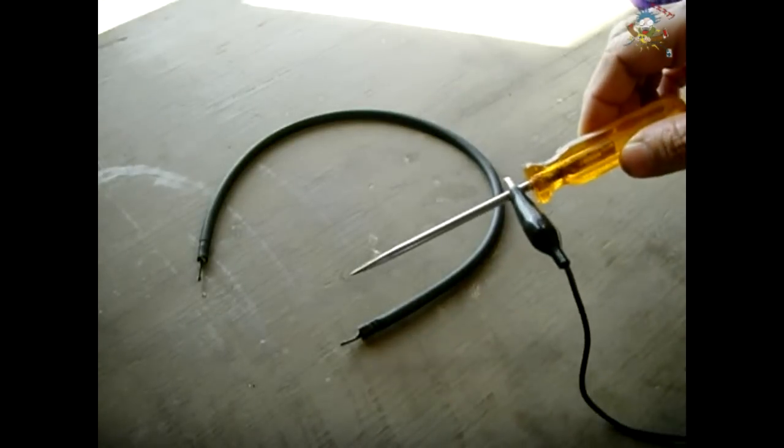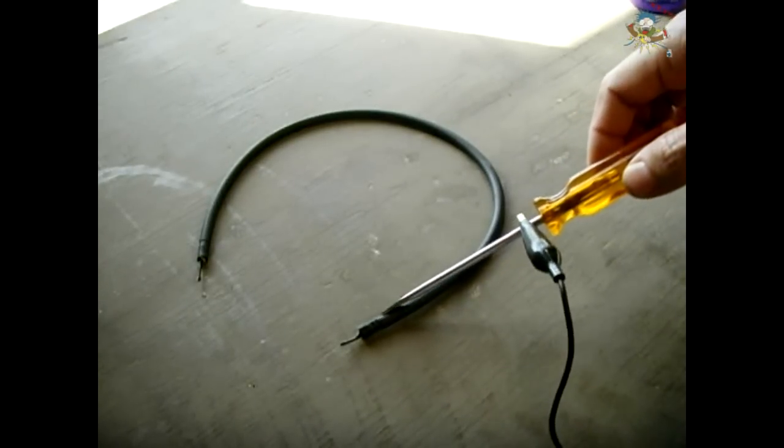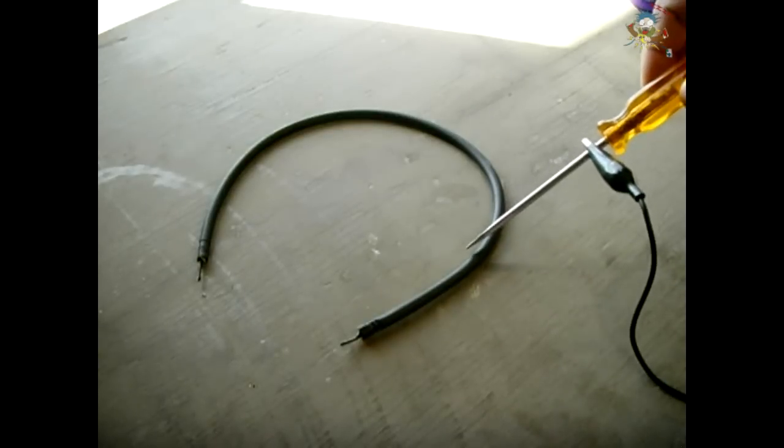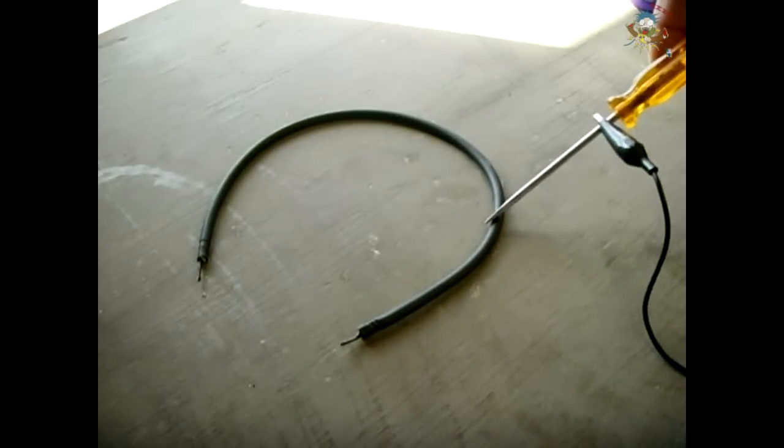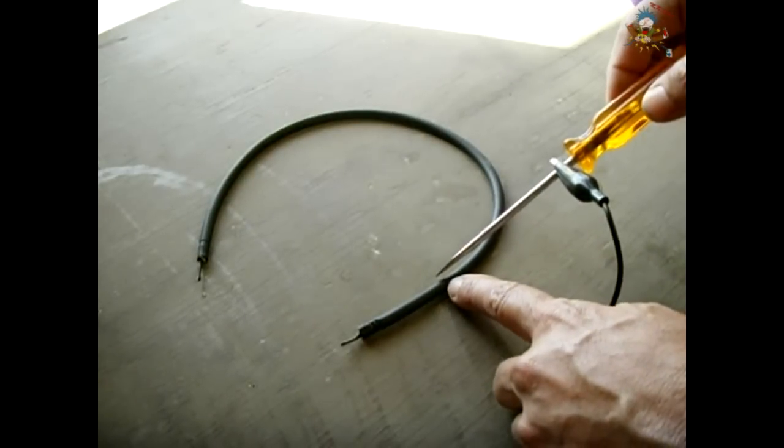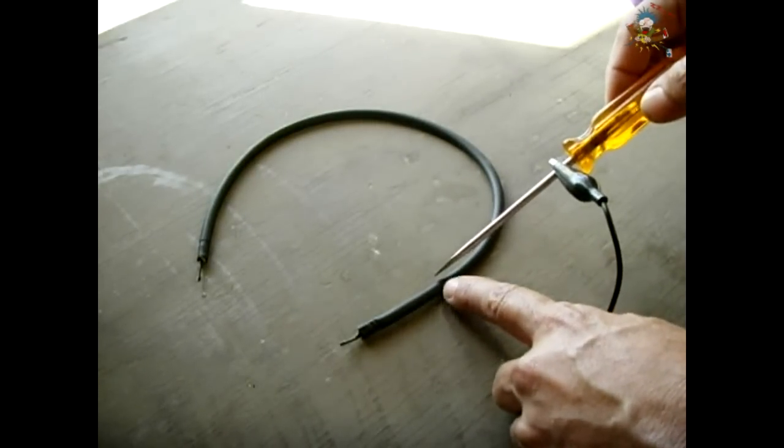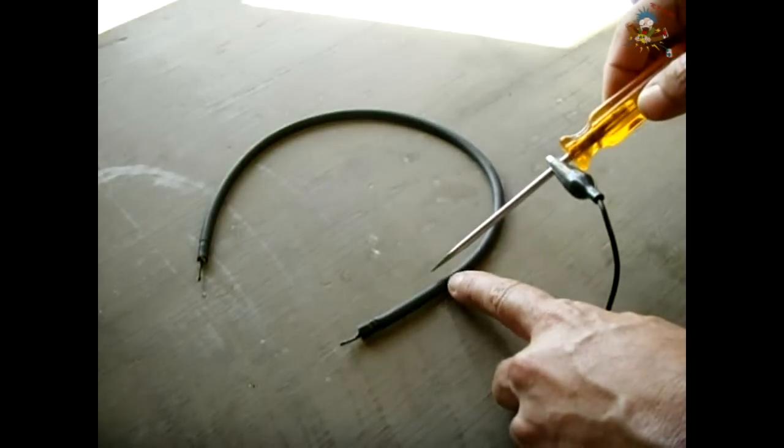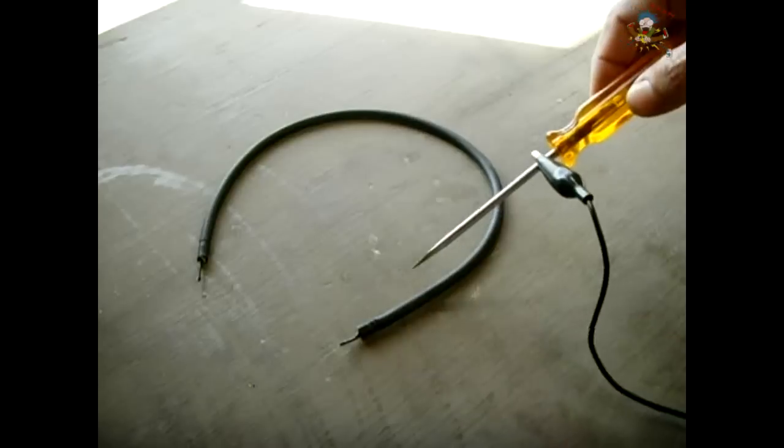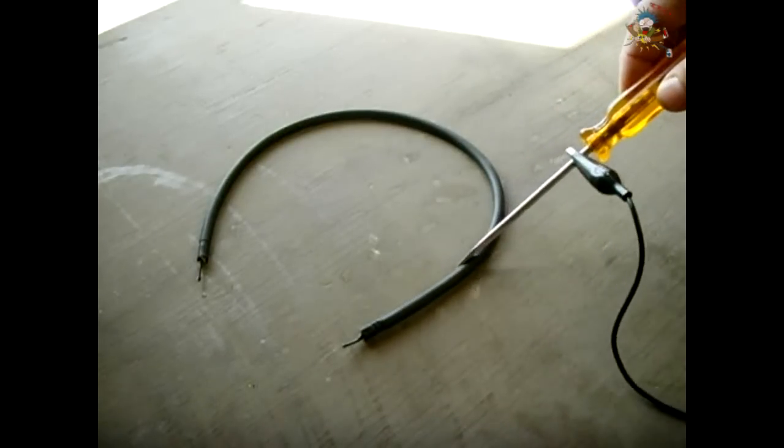The next step is to take your screwdriver and gently drag it close to the wire like this. You could touch it, but keep it a little bit of a space if you can. Drag it down and you're going to observe if you see any sparking. And that's why I wanted you to do this in low light conditions so you could see it. You want to look for sparking between the jacket of the wire and the screwdriver.